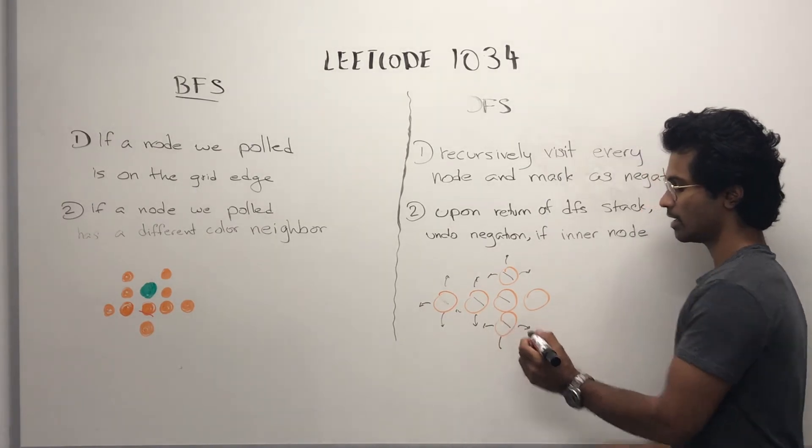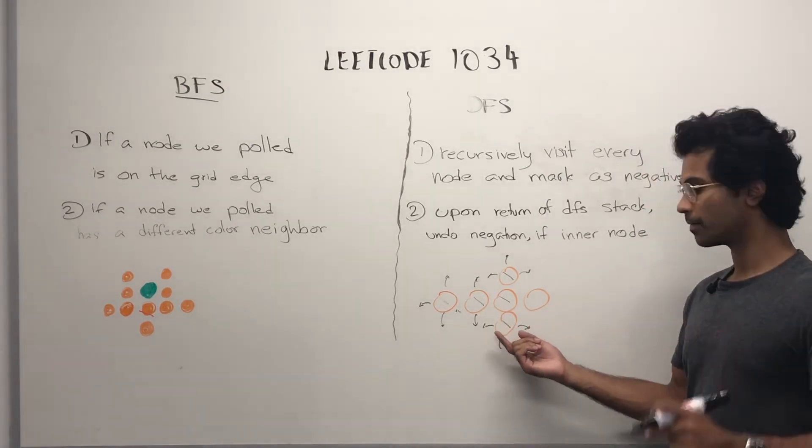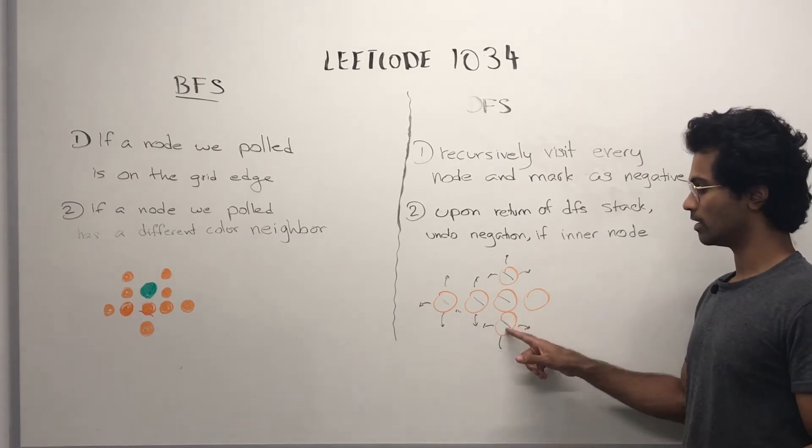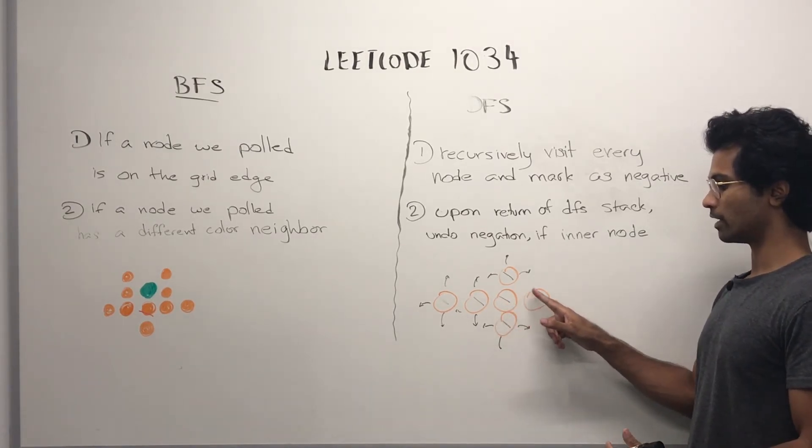left, right. And when this stack is returning, we see that it's not an inner node, so we don't undo the negation. Then we go here. So, this guy finally has this one.